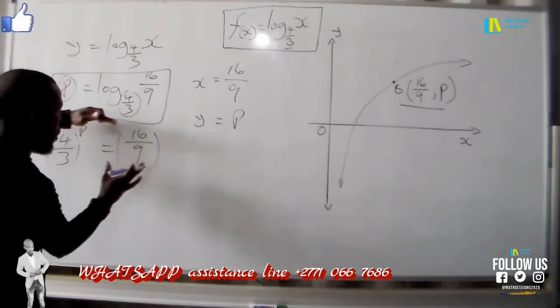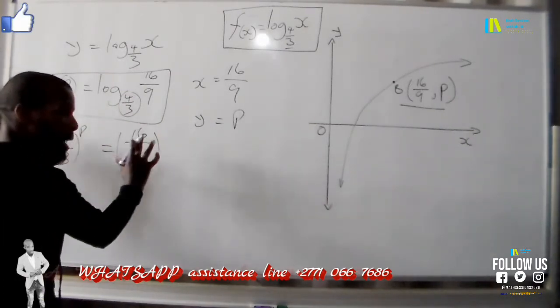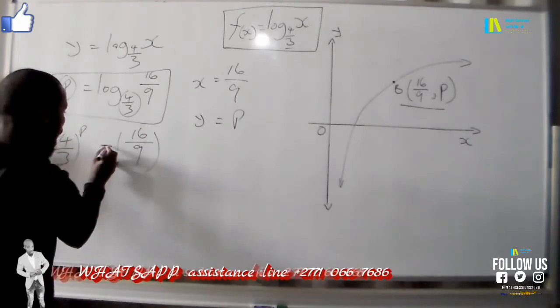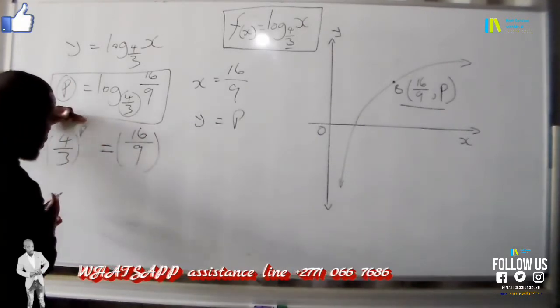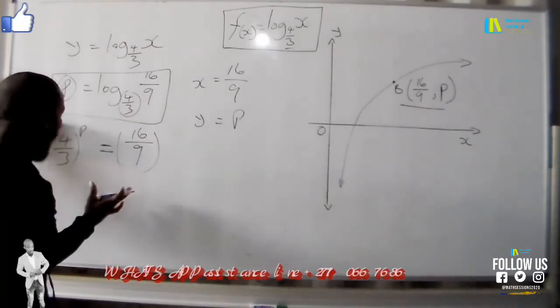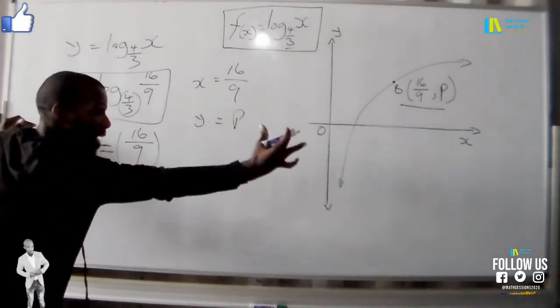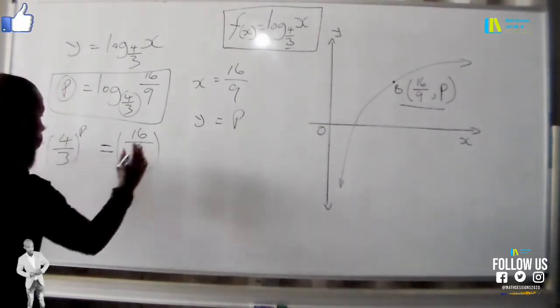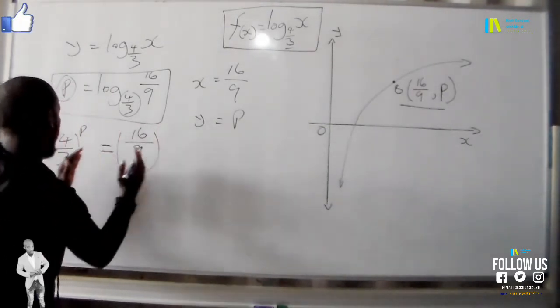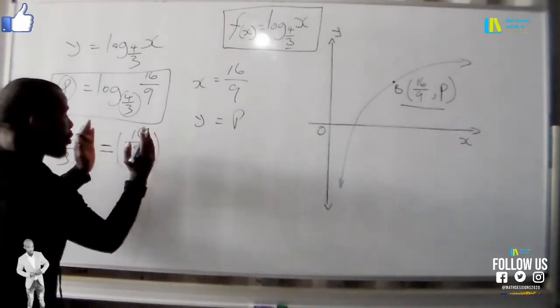Basically now we are having an issue here where our unknown has become now an exponent. When it has become an exponent it is taking us to a rule where we have to make bases the same. The base on the other side of the equal sign must be the same as the base on the other side of the equal sign.